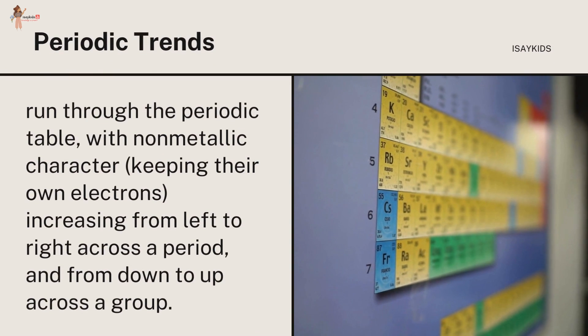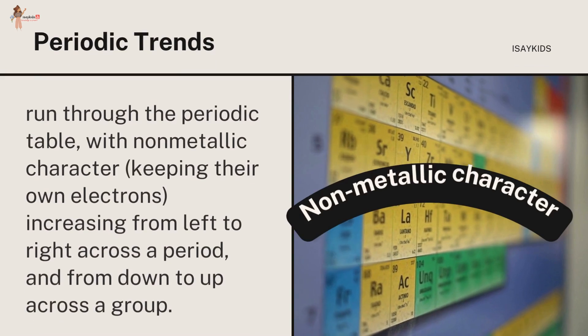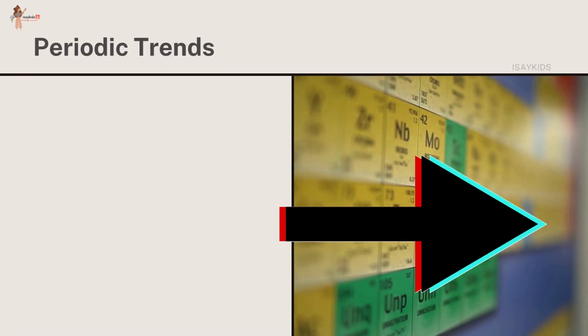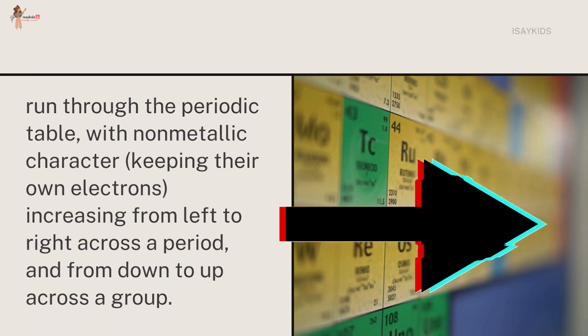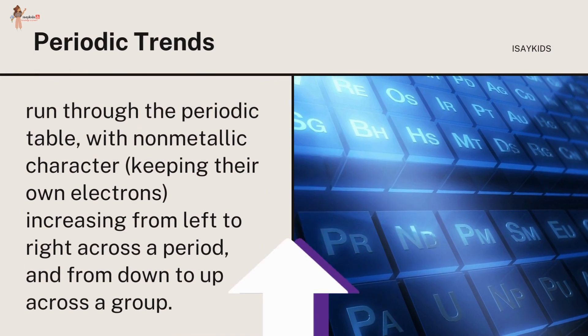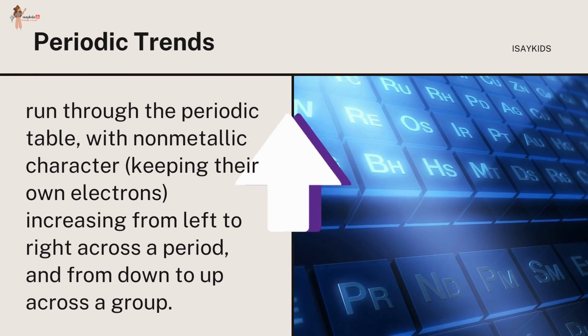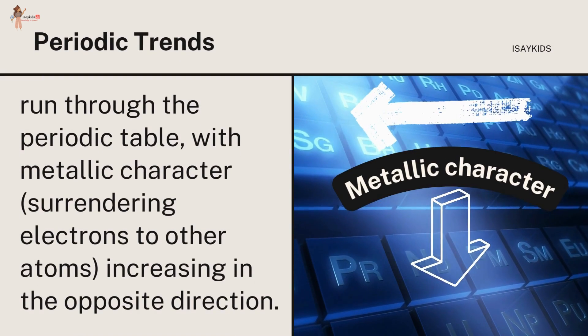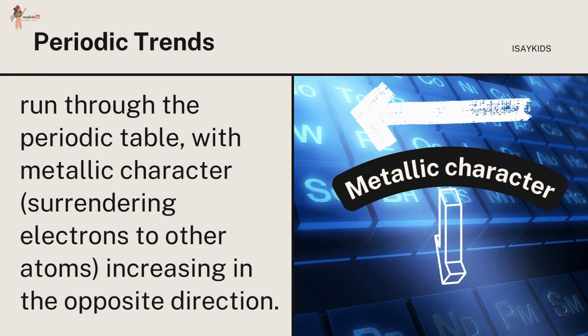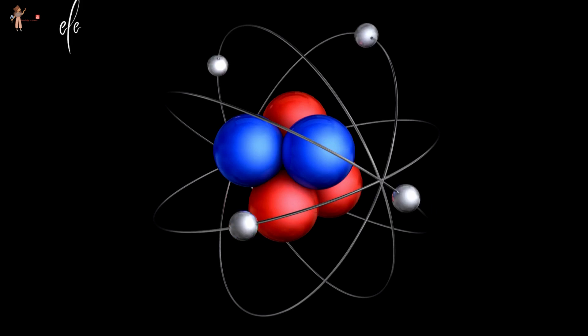Trends run through the periodic table with non-metallic character increasing from left to right across a period and from down to up across a group, and metallic character increasing in the opposite direction. The underlying reason for these trends is electron configuration of the atoms.